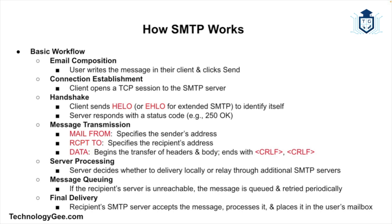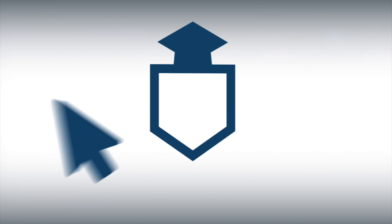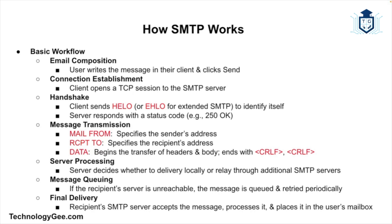How does SMTP work? SMTP operates on a client-server model where email clients such as Outlook, Thunderbird, or webmail interfaces communicate with email servers to send messages. The protocol uses the Transmission Control Protocol (TCP) and typically operates on port 25, although ports 587 and 465 are also used for secure communication.